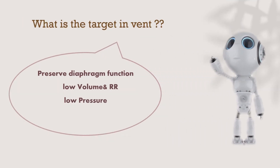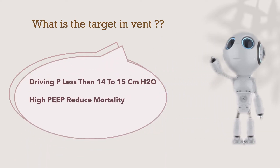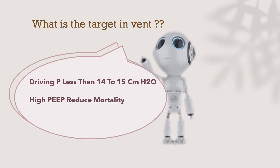So what is our target in ventilation? We need to preserve diaphragmatic function, use low tidal volume and low respiratory rate, and maintain low pressures in the lung. We should also avoid oxygen toxicity from FiO2. We can maintain driving pressure less than 40 to 50 cm water. High PEEP can be used to prevent lung derecruitment and is also helpful in reducing mortality.